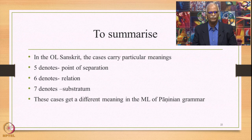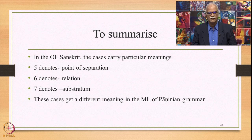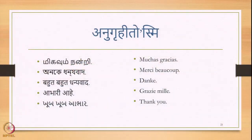To summarize what we have studied so far: in the object language Sanskrit, the cases carry particular meanings. The 5th case denotes point of separation, translated using the word 'from.' The 6th case denotes relation, translated using the word 'of.' The 7th case denotes substratum, translated using the words 'in' or 'on.' Most importantly, these cases get different meanings in the meta-language of Paninian grammar — which we shall study in the next lecture.